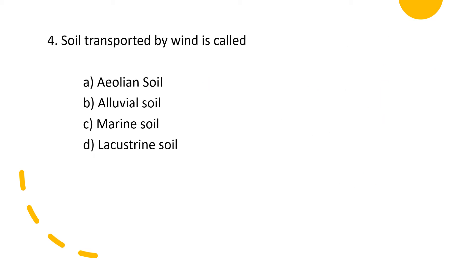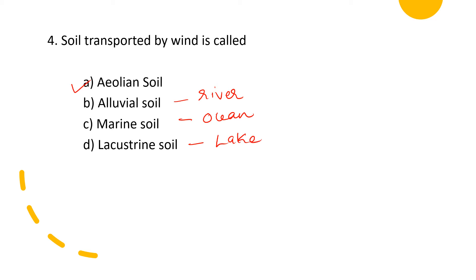Fourth question: soil transported by wind is called — A: aeolian soil, B: alluvial soil, C: marine soil, D: lacustrine soil. The answer is option A, aeolian soil. Alluvial soil is transported by running water (rivers), marine soil is an ocean deposit, and lacustrine soil is deposited under lakes.